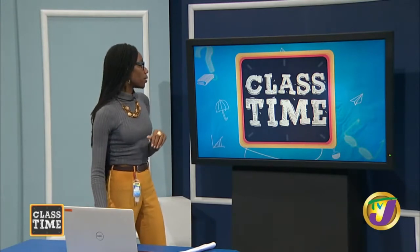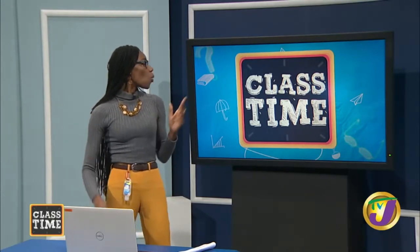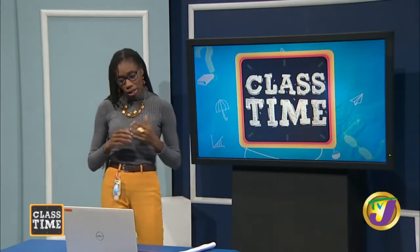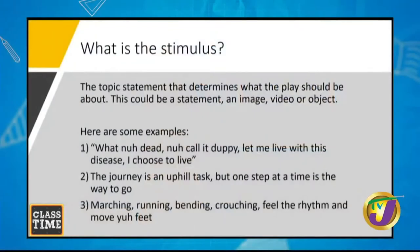Let us look at some examples. Number one: 'One not dead, not that shit way. I don't call it doppy. Let me live with this disease. I choose to live.' Number two: The journey is an uphill task, but one step at a time is the way to go. And three: Marching, running, bending, crouching, feel the rhythm and move your feet. That's a lot of action, giving you an idea of what you're supposed to do.